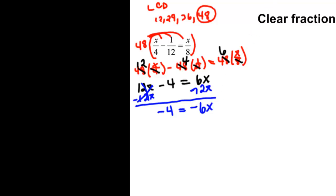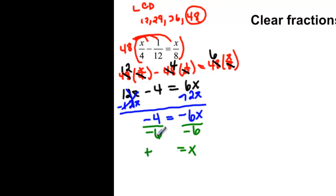It's okay to have a negative; we're just going to divide by a negative and just watch our signs. So we're going to divide both sides by that negative 6 so we can get x by itself. Positive 4 over 6 reduces to 2 over 3.